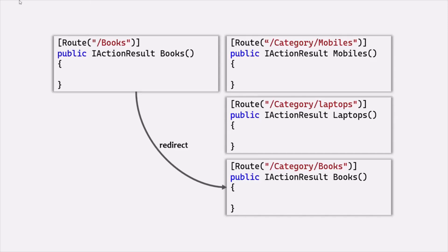So for example, if the user types root URL slash books in the address bar, it will automatically redirect the user to root URL slash category slash books. To achieve this, we can use another action result provided by ASP.NET Core, and that is RedirectToActionResult. Let's see how we can achieve this with an example.